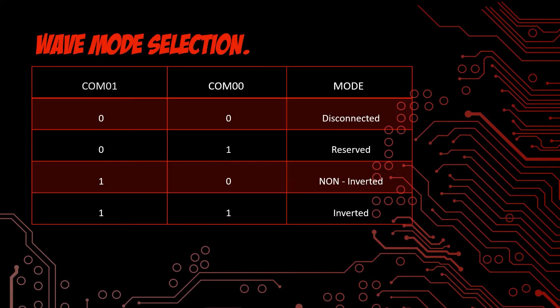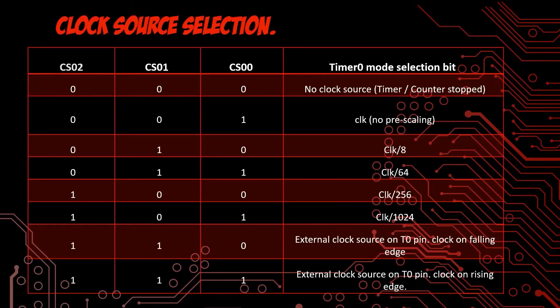The wave mode selection bits of Atmega32 timer 0 also has 2 bits: COM01 and COM00. These two bits can be set in 4 different forms. In PWM generation, we use the last two forms as non-inverted and inverted. By setting COM01 to 1, we get a non-inverted wave. Setting both COM01 and COM00 as 1 gives an inverted PWM wave.